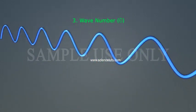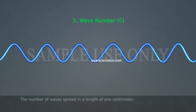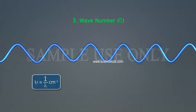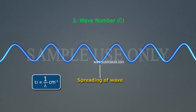Wavenumber (Nu bar): The number of waves spread in a length of one centimeter. Nu bar equals one by lambda, centimeter inverse. Unit: centimeter inverse.